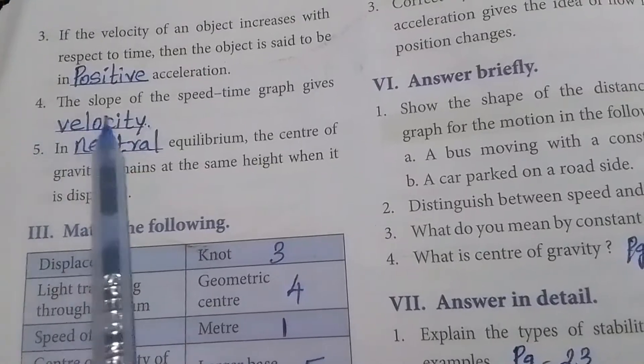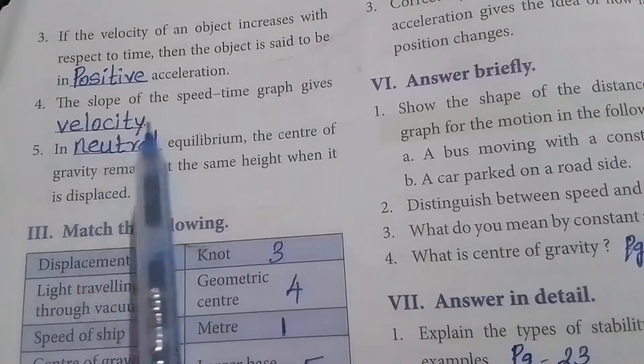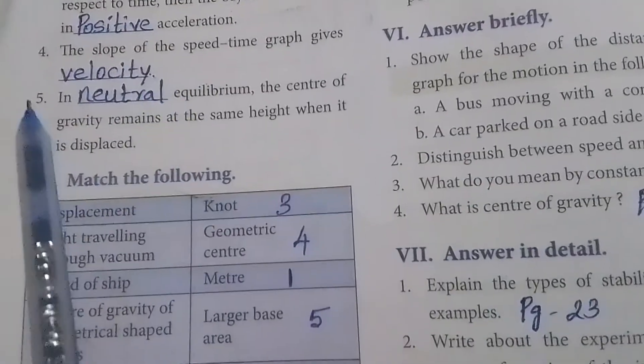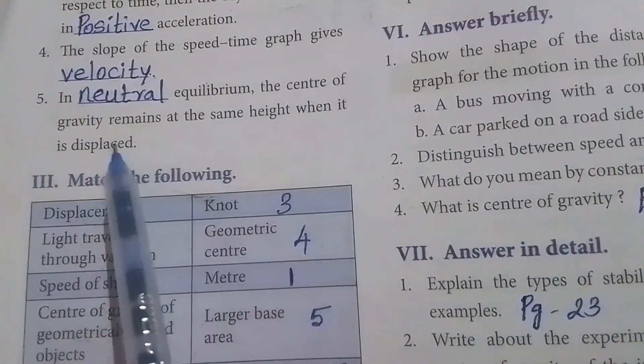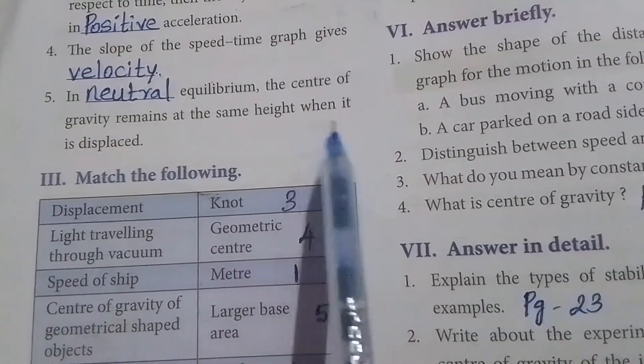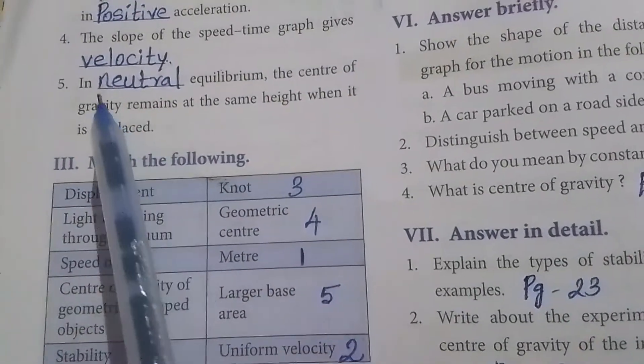Fourth one: The slope of the speed time graph gives - answer, velocity. Fifth one: In neutral equilibrium, the center of gravity remains at the same height when it is displaced.